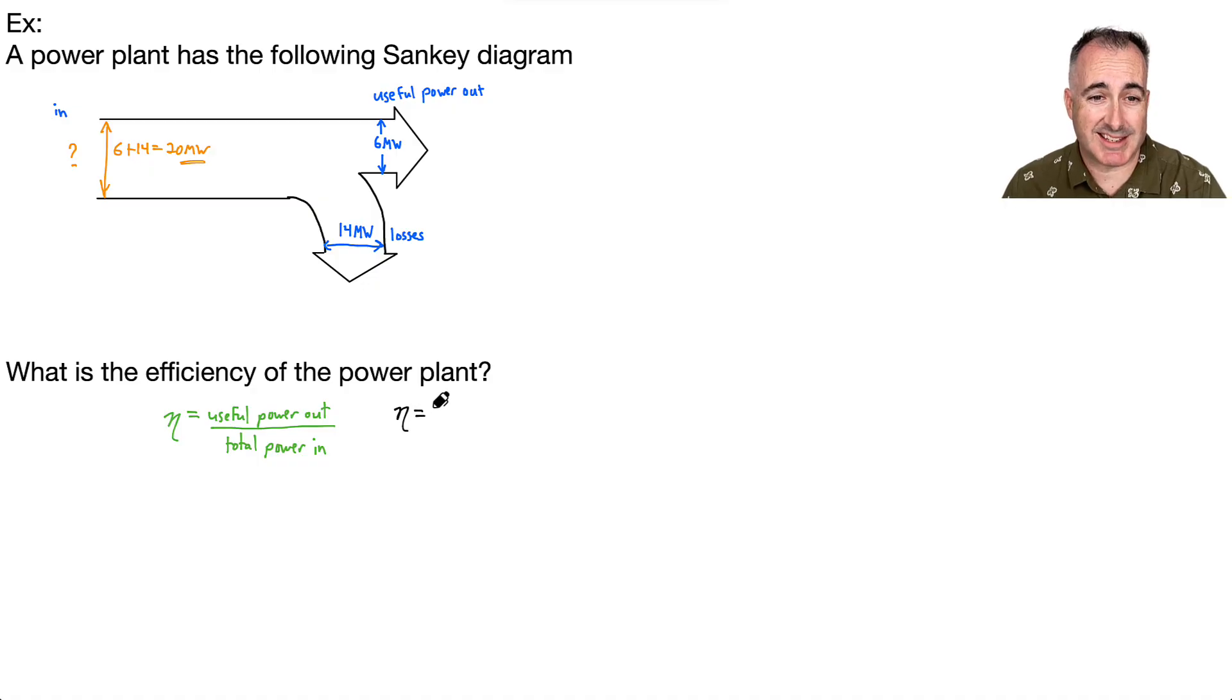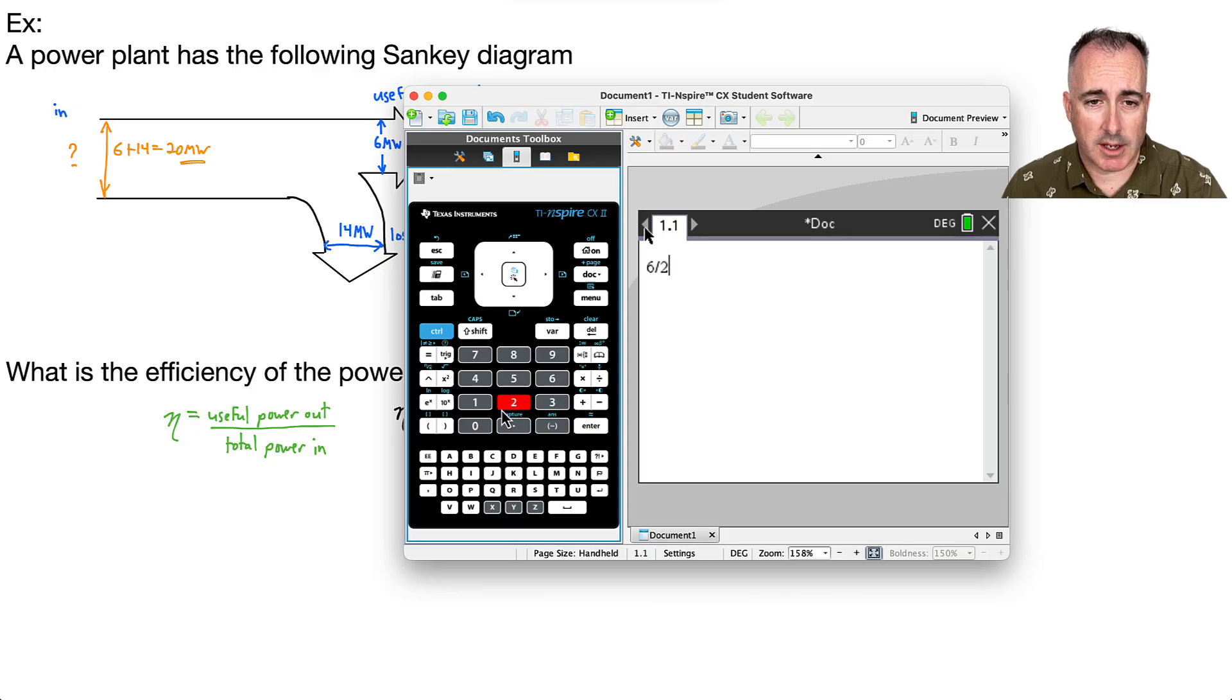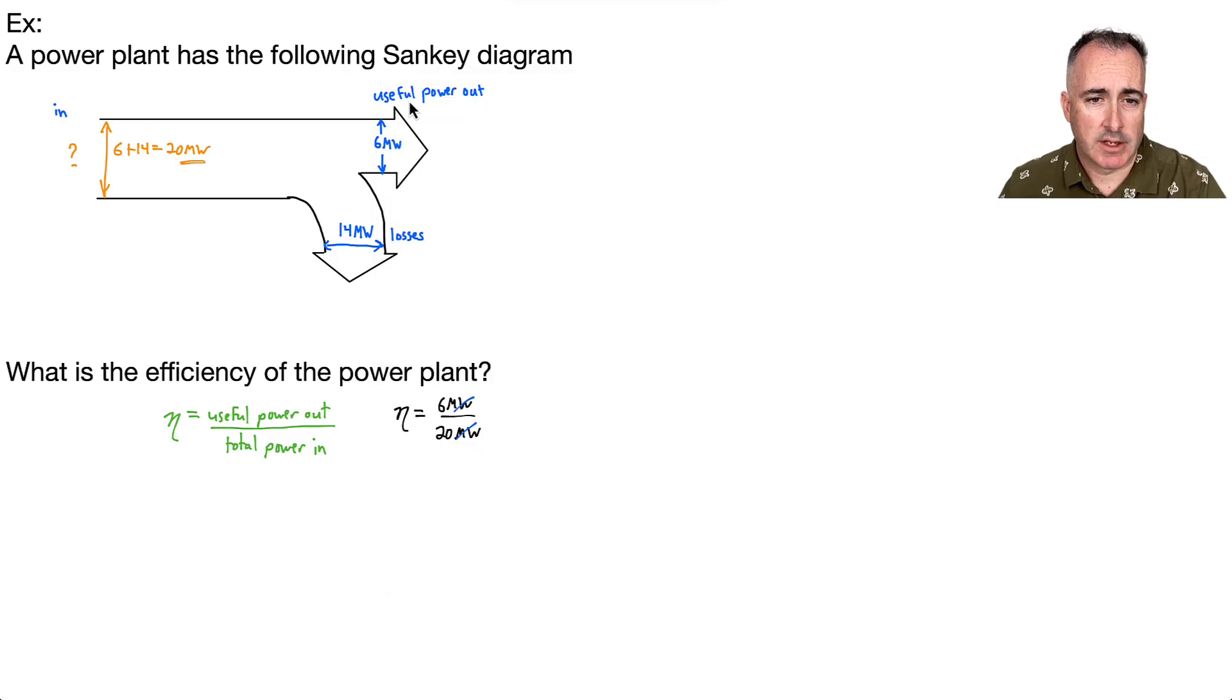So that means in our case, the efficiency will be the useful power out, which is six megawatts, divided by the total in, which is this 20 that we just found. Good news, the megawatts all cancel out. They're supposed to, it's just a number. So we have six over 20. And I can use my calculator for that. It's just going to be 0.3. Therefore, it is 0.3.